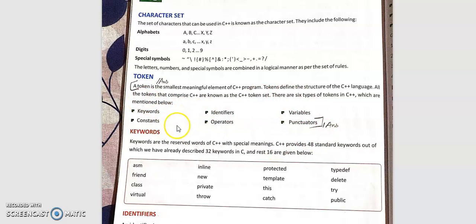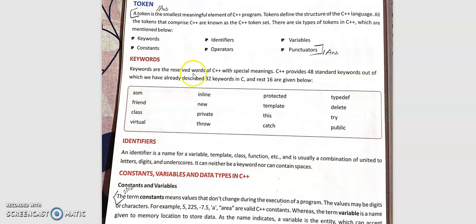Then variables and function names and punctuators. All these we have already encountered in C. For keywords, I'll give you examples like class, private, this, try, delete. All these keywords have meaning and you cannot use them as variable names.